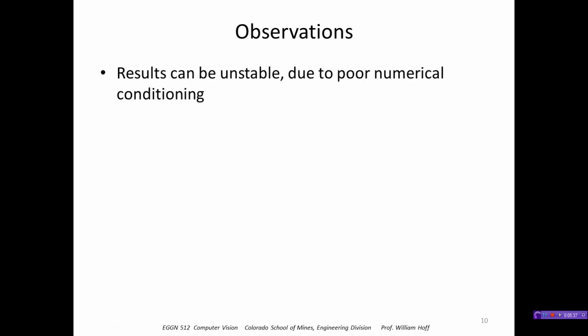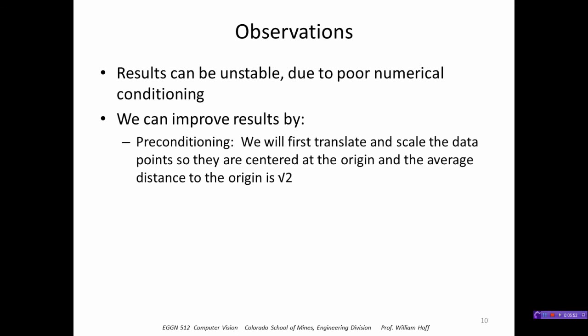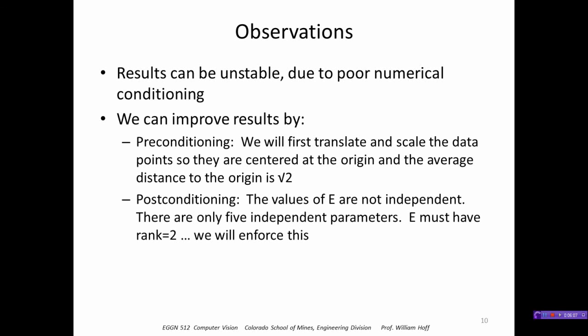One thing people have found using this algorithm is that the results can be unstable. A little bit of image noise can cause a large error in the resulting essential matrix. We can improve the results by two things: one, we can precondition the image points, so we translate and scale those points so that they're centered at the origin and the average distance to the origin is square root of two.